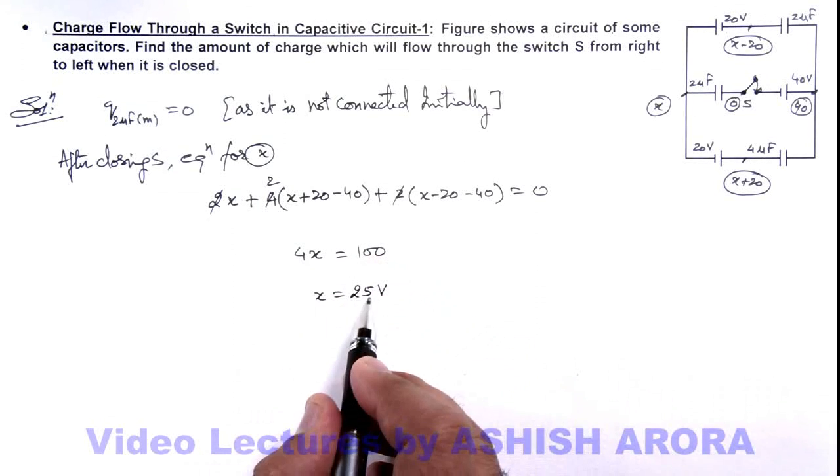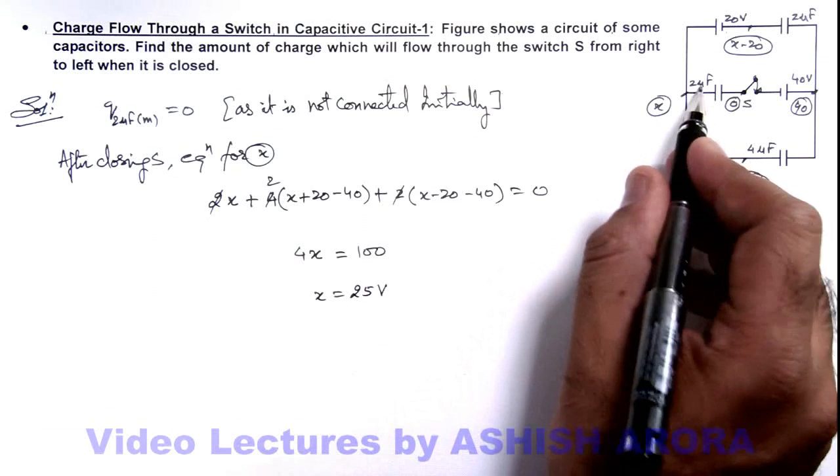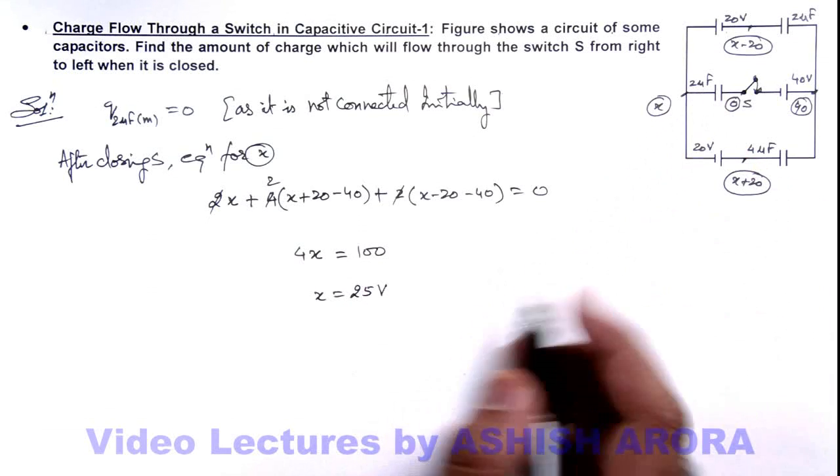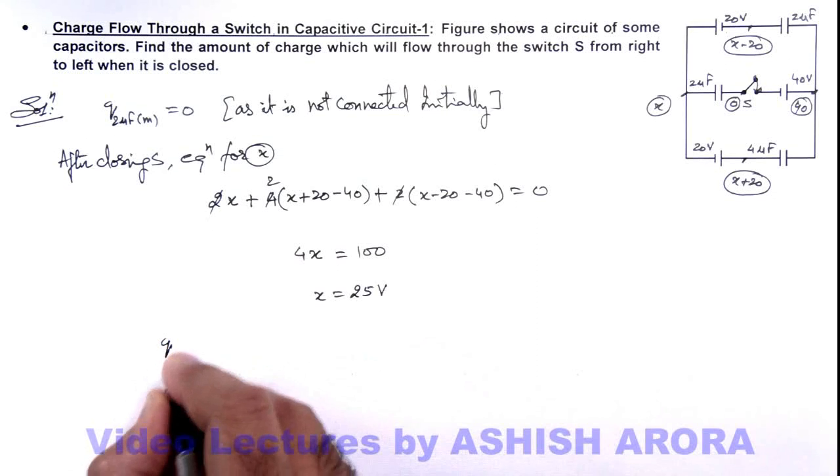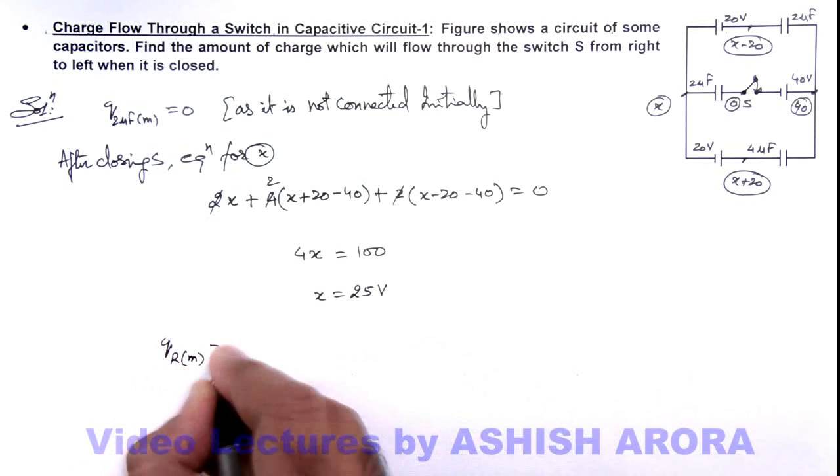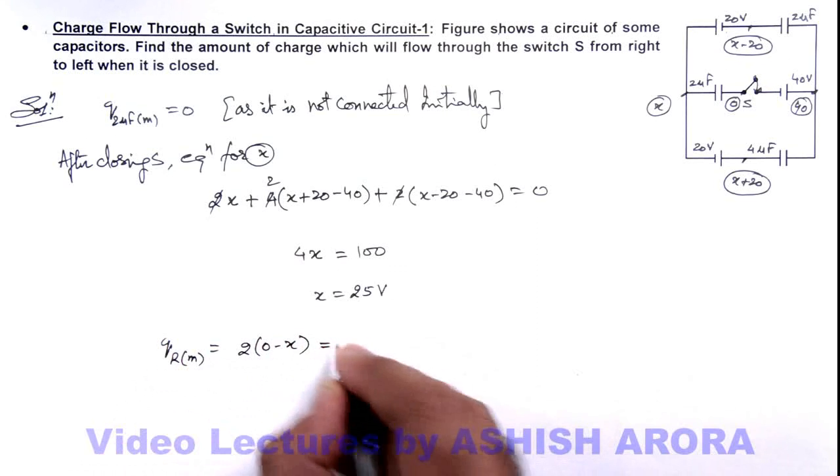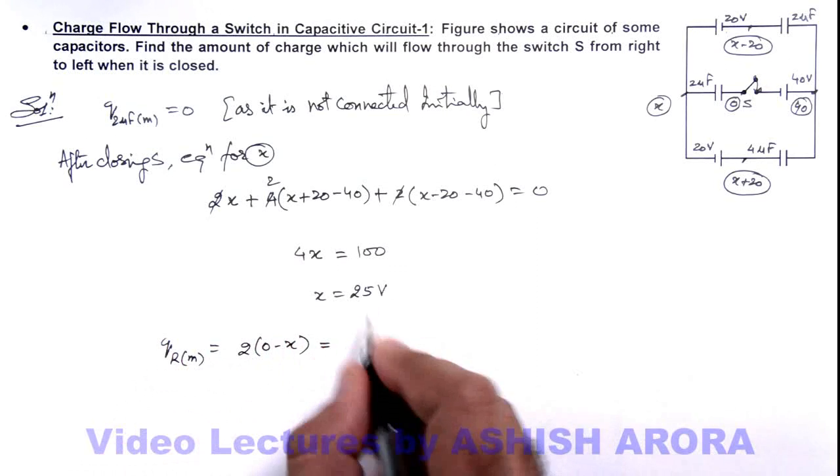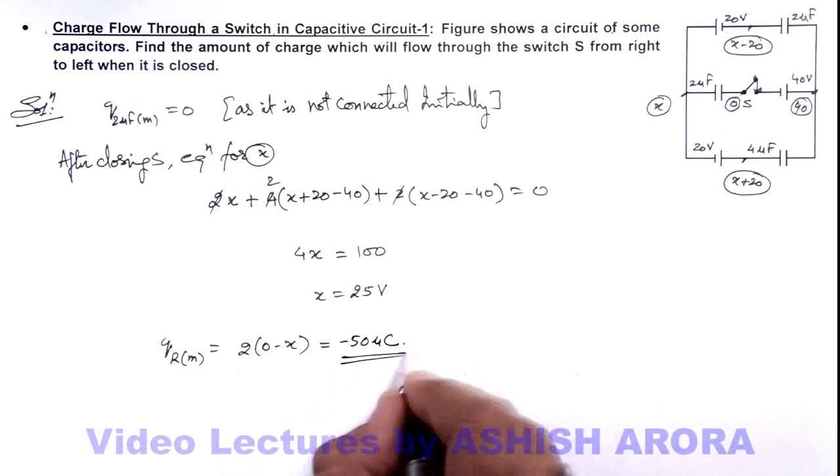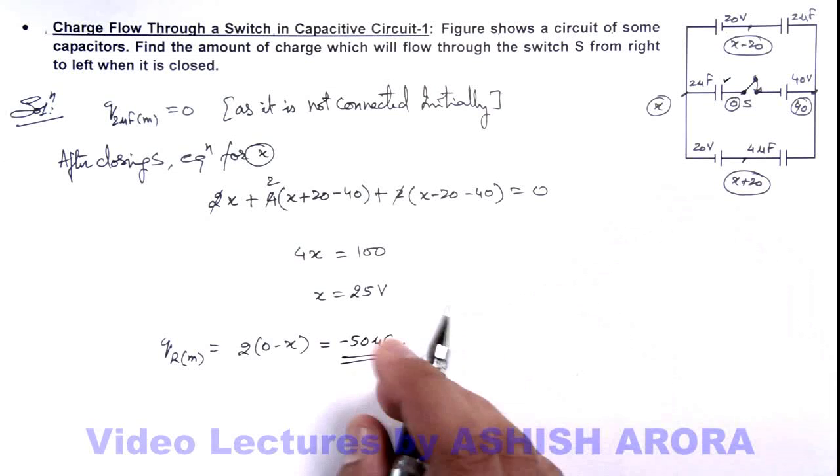So value of x we have got is 25 volts. We can find out the charge on this plate of capacitor—that is charge on right plate of middle capacitor—will be 2 multiplied by zero minus x. This will be 2 multiplied by minus 25, it is minus 50 microcoulombs. So this is the charge on the right plate of this capacitor.